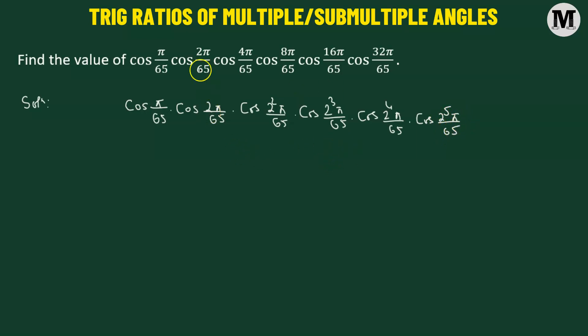The reason why we're writing in this particular fashion is because we have a standard formula. We know that if we have cosine of angle A multiplied to cosine of angle 2A times cosine of angle 2 squared A times cosine of angle 2 cubed A, this goes all the way up to cosine of 2 raised to the power of N minus 1 times A.